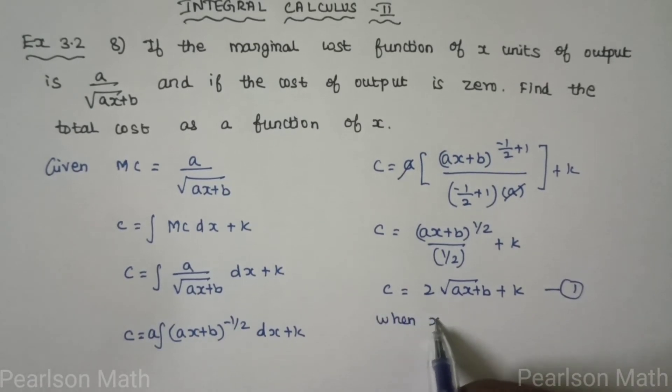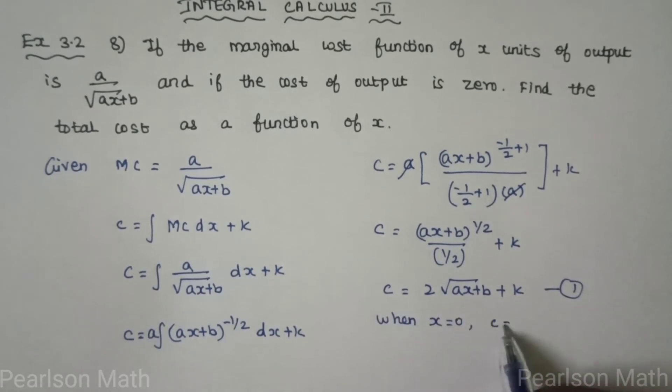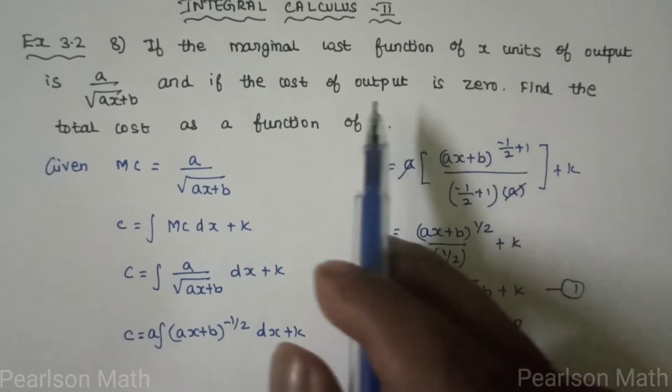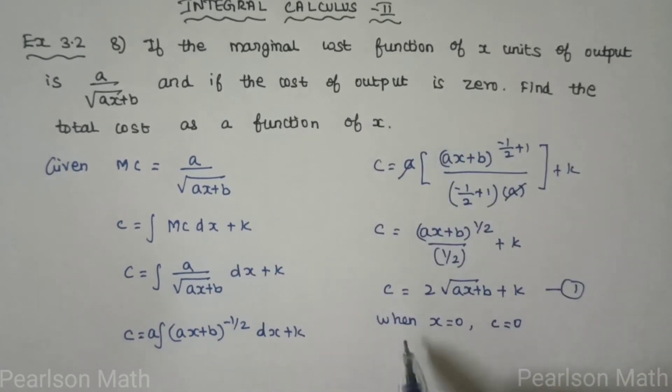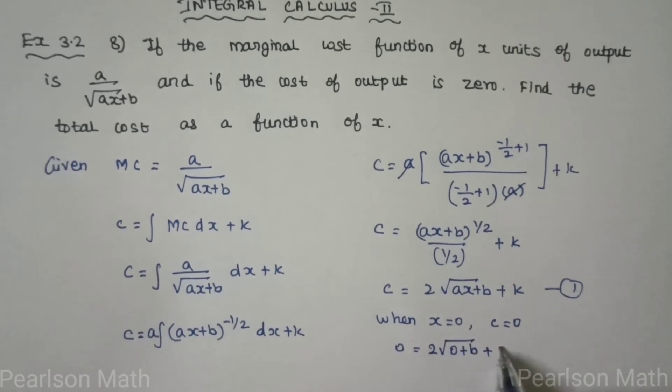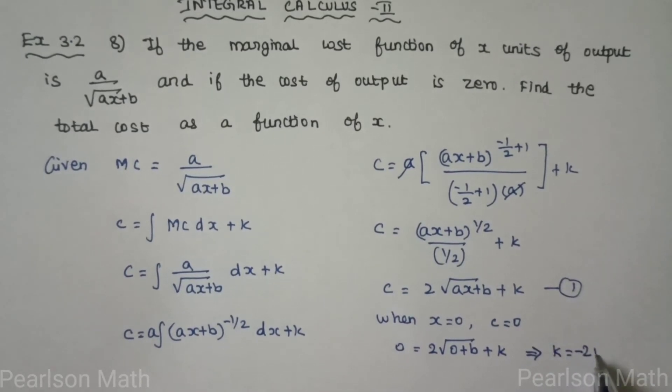To check the equation, we have to find the value. When x equals 0, C equals 0. K is the value in the equation. The cost of output is 0, so we substitute 2 into root of 0 plus b plus k. Therefore, k value is minus 2 root b.